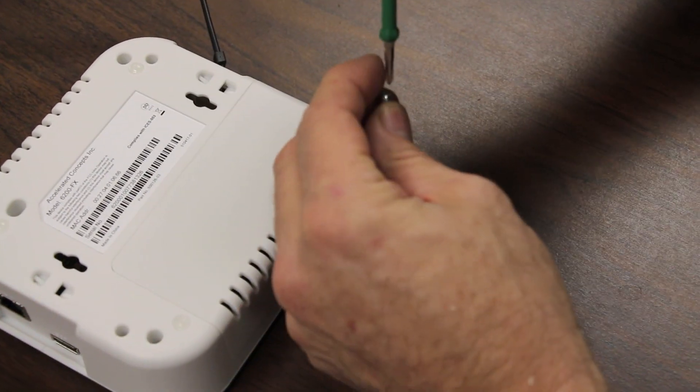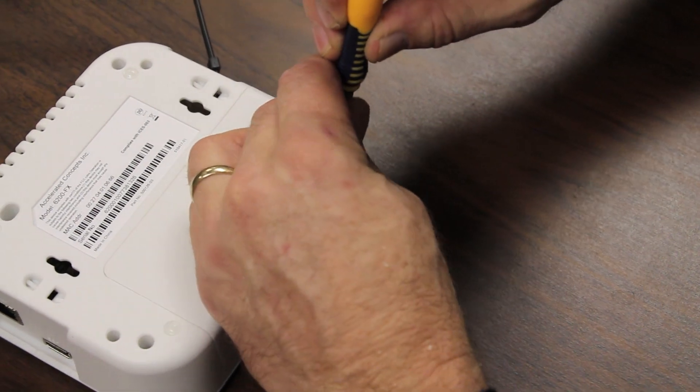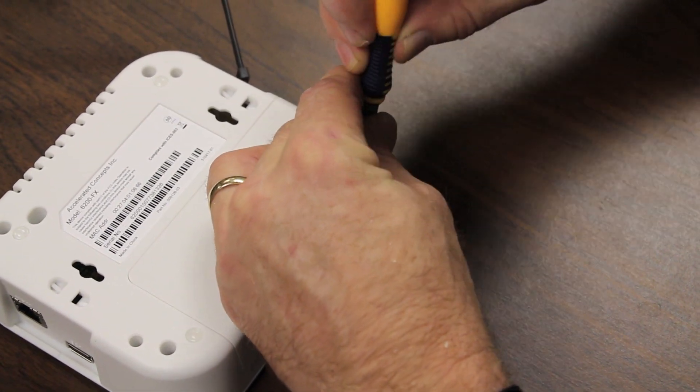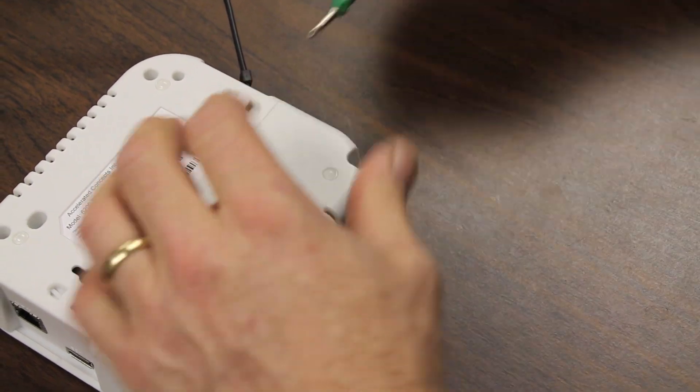You can see the external antennas are installed. Let's put the cover back on. Again, the cover is just designed to hide that radio so people won't see it and decide it's something they can use in their laptop. Put the screw back on.